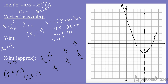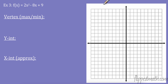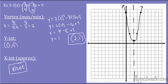Pause the video and try this one on your own. In this one, a is 2, b is negative 8. The opposite of negative 8 over 2 times 2 gives us x equals 2. Plugging that in gives us vertex (2, 1). We have our axis of symmetry at x equals 2, and our y-intercept at 9 — when x is 0, the x-terms cancel and y equals 9. Something really interesting: this parabola has no x-intercepts — it doesn't touch the x-axis at all.